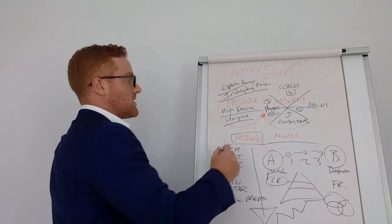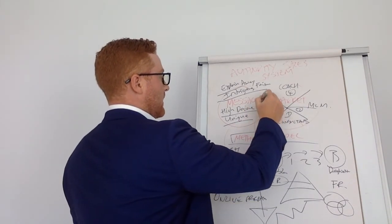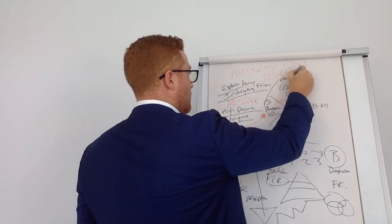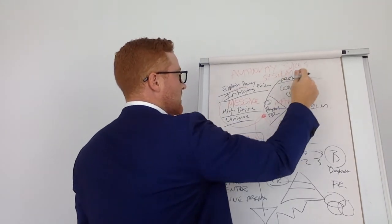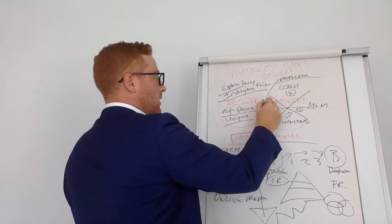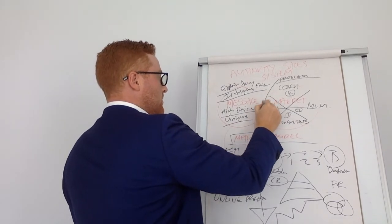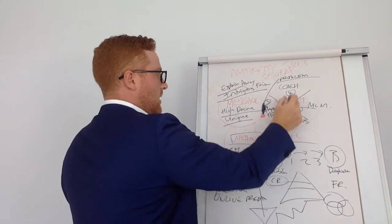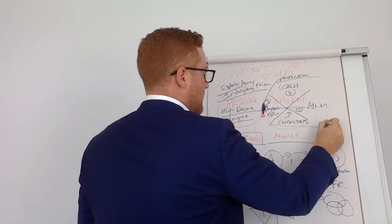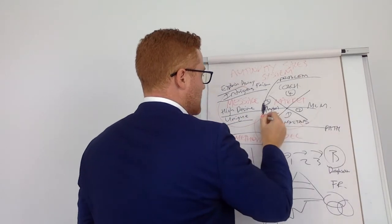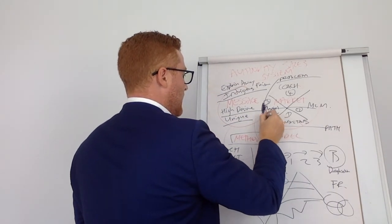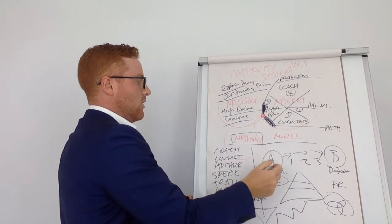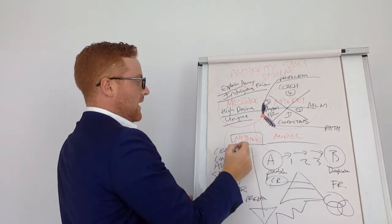So the first thing that you must get is you must get between the message and the market. So right in here is the problem. The problem that you solve. This is the first thing that we help you with. Get real clear on the problem that you solve. This bit right in here, in between message and market. The second between market and model, this here is the path. This is the next thing that we do. We make sure that you have a really good path that the market wants to go.